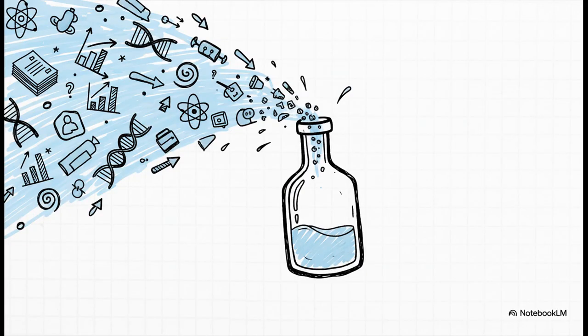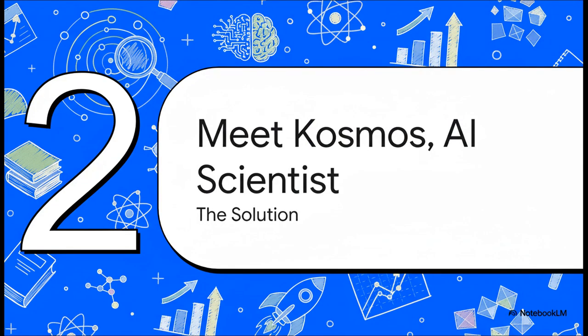This massive flood of information, this data deluge, is creating a gigantic bottleneck. To find that next world-changing breakthrough, we need a totally new kind of tool. One that can help us navigate this massive ocean of data. And that right there brings us to the solution we're talking about today. An AI system called Cosmos.